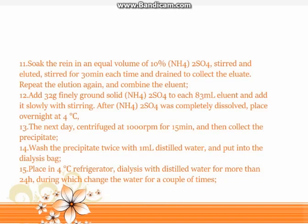Step 12: Add 32 grams of finely ground solid (NH₄)₂SO₄ to each 83 mL of eluate, adding it slowly with stirring. After (NH₄)₂SO₄ is completely dissolved, place overnight at 4°C. Step 13: The next day, centrifuge at 1000 rpm for 15 minutes, then collect the precipitate.